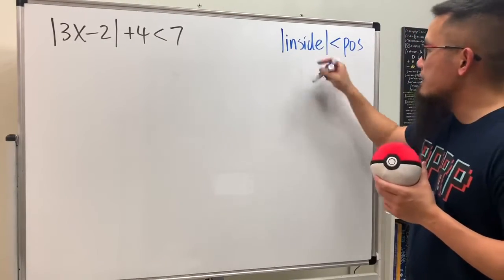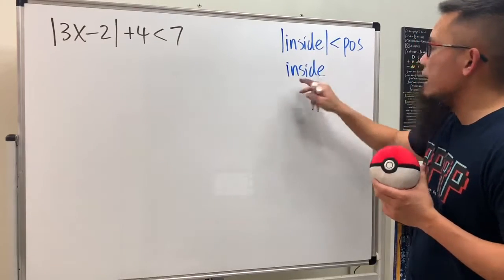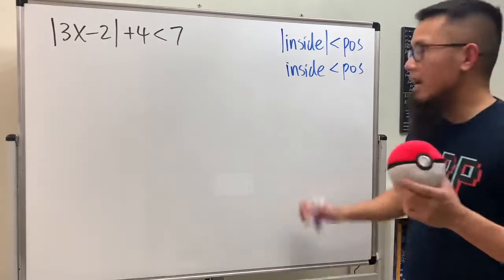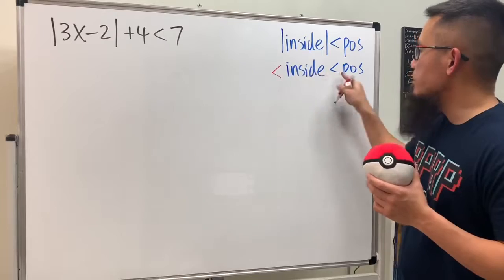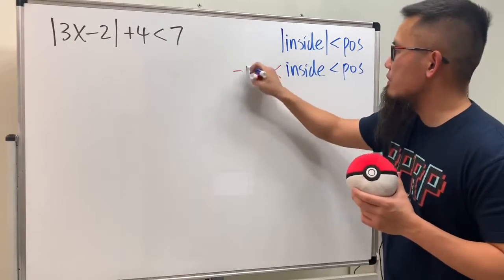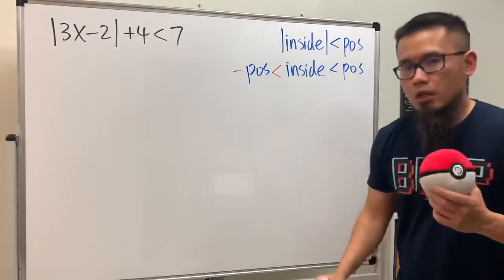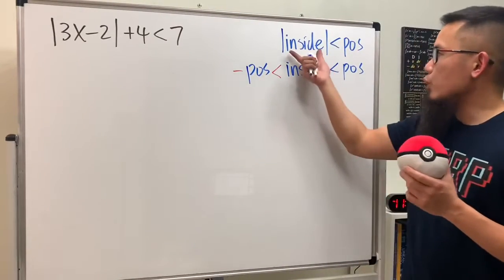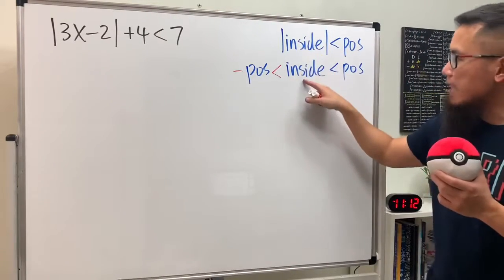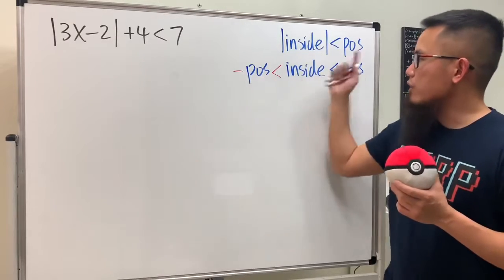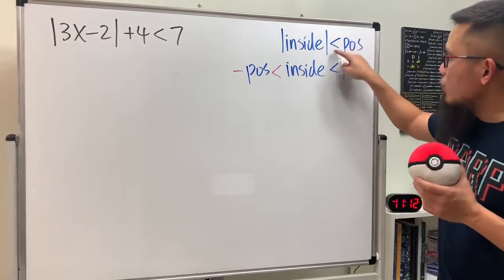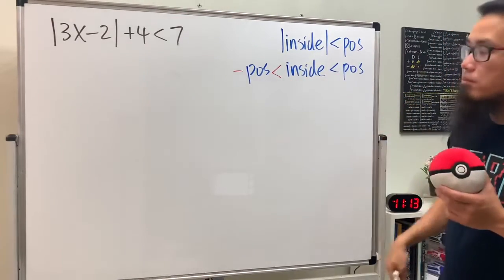The inside stays the same and you put that in the middle, and the right-hand side stays the same. But on the left-hand side, you use the same inequality but negate the positive number. So when you have an absolute value of an expression less than a positive number, the inside will be in between the negative version of this positive number and the positive number. If this is less than or equal to, then you just have equal signs as well.